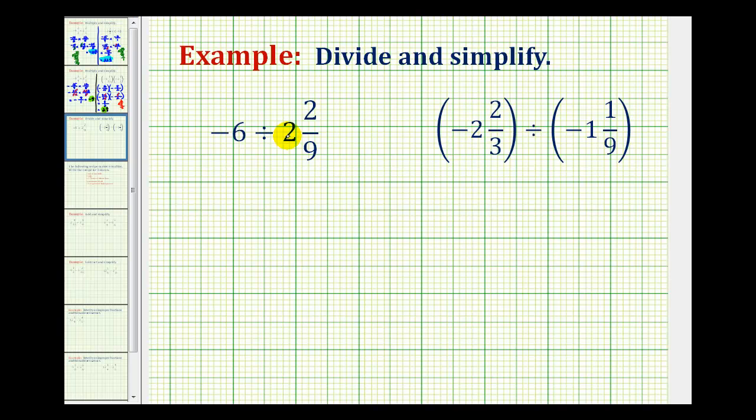So for the first example, we can write negative six in fraction form by making a denominator of one. So we'll have negative six over one divided by two and two ninths as an improper fraction. We'll have a denominator of nine, and the numerator would be nine times two plus two, which would be 20.